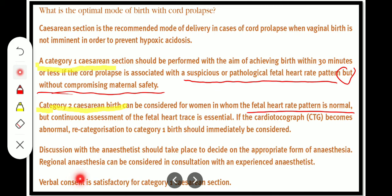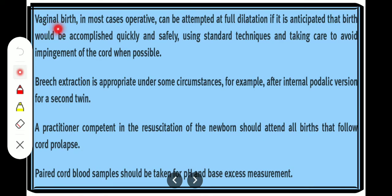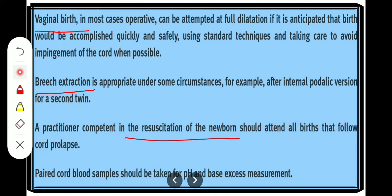Verbal consent is satisfactory for category 1 cesarean section. Vaginal birth — in most cases operative — can be attempted at full dilatation if it is anticipated that birth would be accomplished quickly and safely using standard technique, taking care to avoid impingement of the cord when possible. Breech extraction is appropriate under some circumstances, for example for internal podalic version for the second twin. A practitioner competent in resuscitation of the newborn should attend all births following cord prolapse. Paired cord blood samples should be taken for pH and base excess measurements.